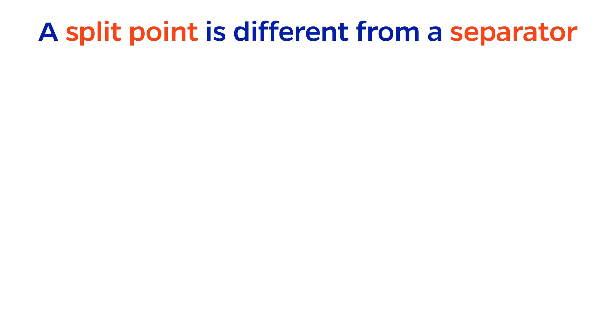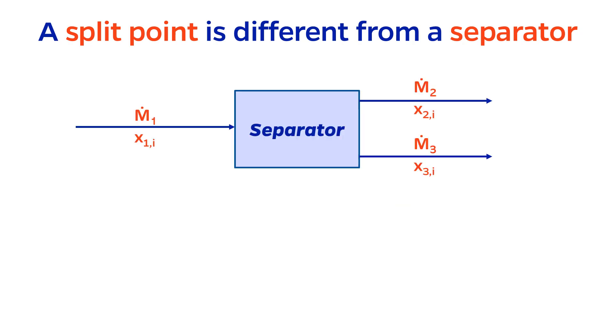Split points are often times confused with separators, possibly because separators also have one input and two usual outputs, and also begin with the letter s. However, a separation process alters the composition of the feed stream.